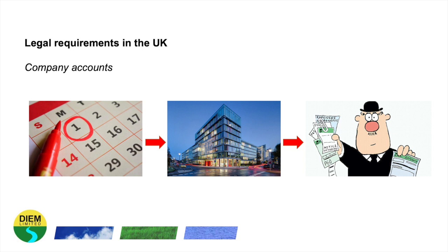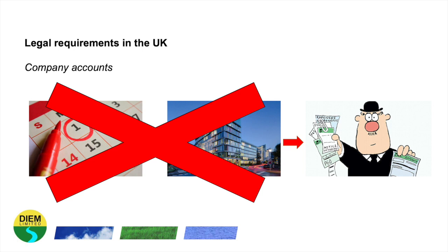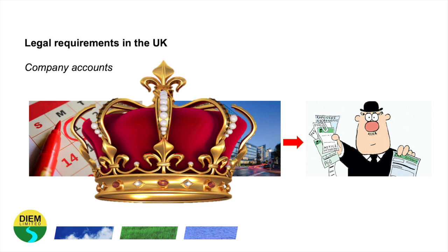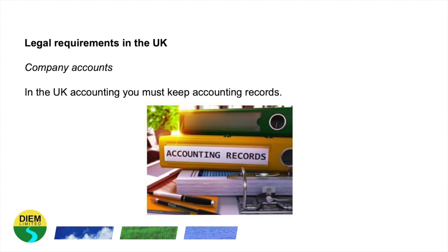In the UK a company must deliver accounts every year to Companies House, even if the company is dormant. Non-compliance with this might lead to the UK government assuming that the company is no longer carrying on business or in operation, and the government can take steps to strike it from the register. If the company is struck off the register, it ceases to exist and its assets become Crown property. In the UK you must keep accounting records as a business, and these must contain records showing all money received and spent by the company, and a record of the assets and liabilities — basically what you have in terms of capital and money, and what you owe.